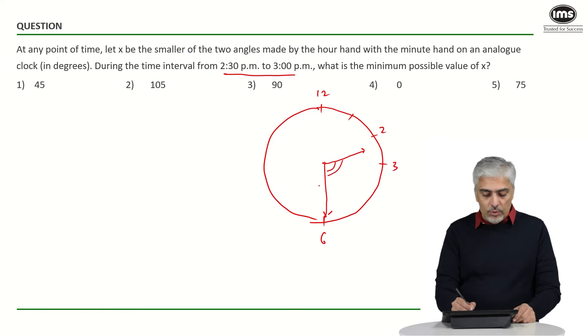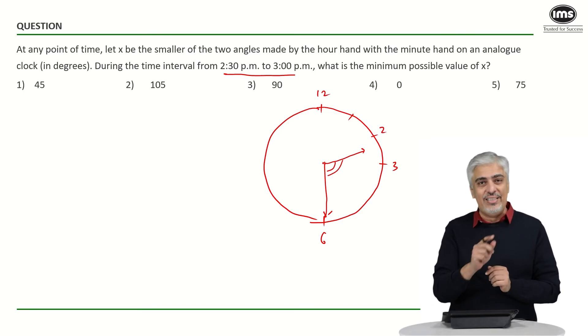Now if you think carefully, this is the smaller angle right now. This smaller angle is more than 90. You can see that this smaller angle is definitely more than 90 because if the hour hand would have been exactly at 3 and the minute hand at 6, then the angle would have been 90. But here it is definitely slightly more than 90.